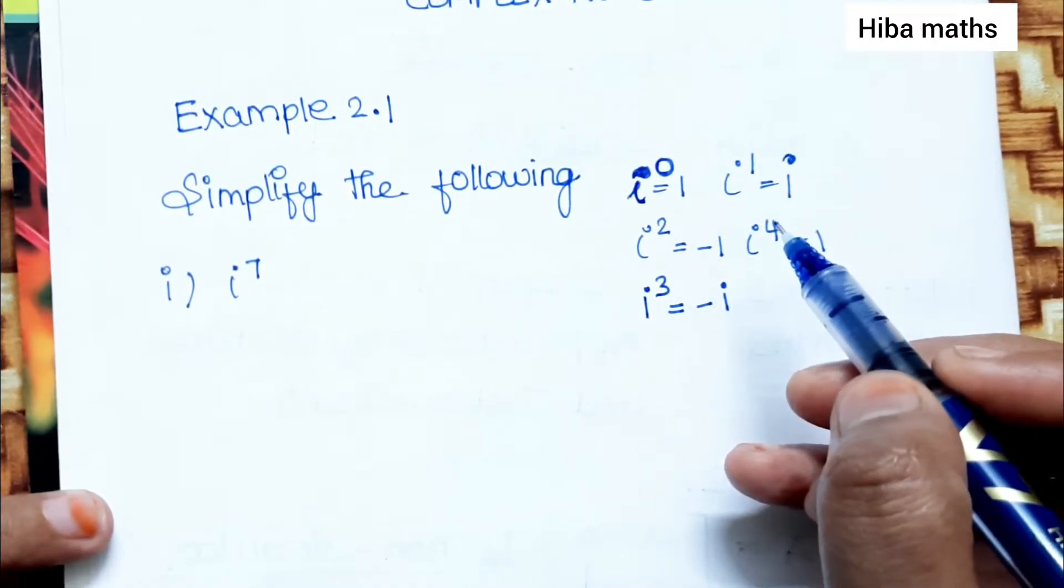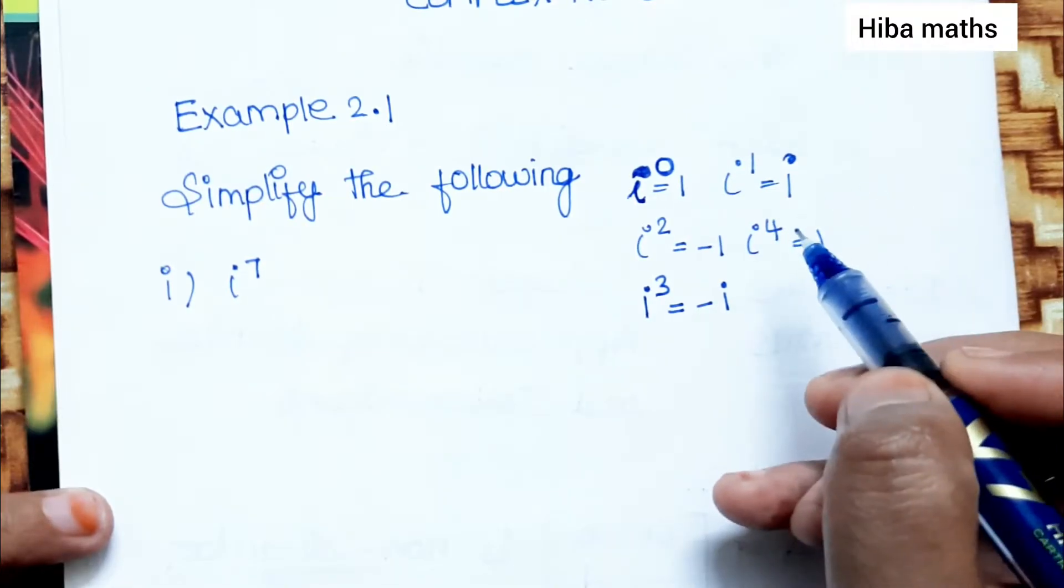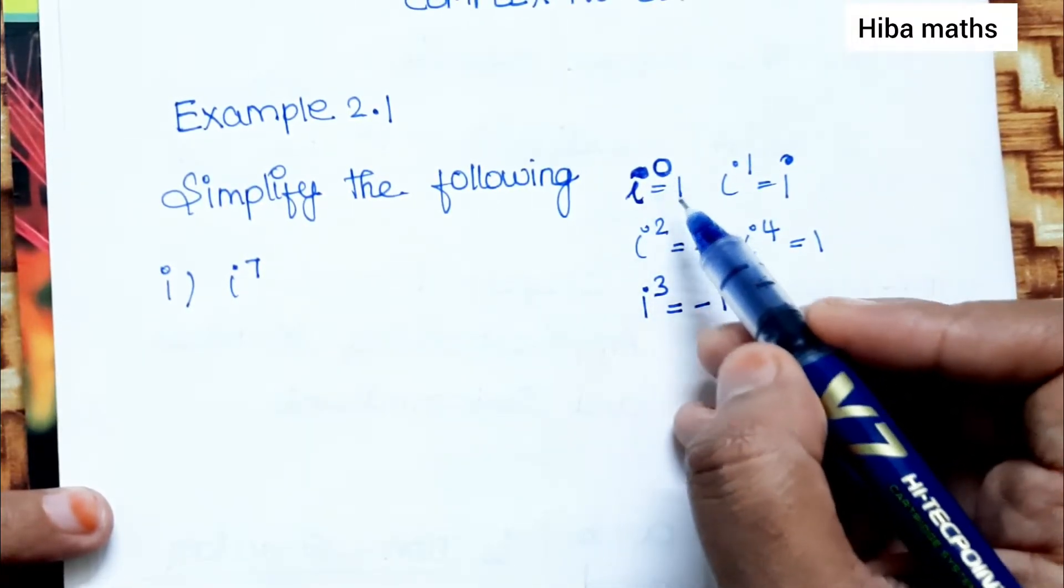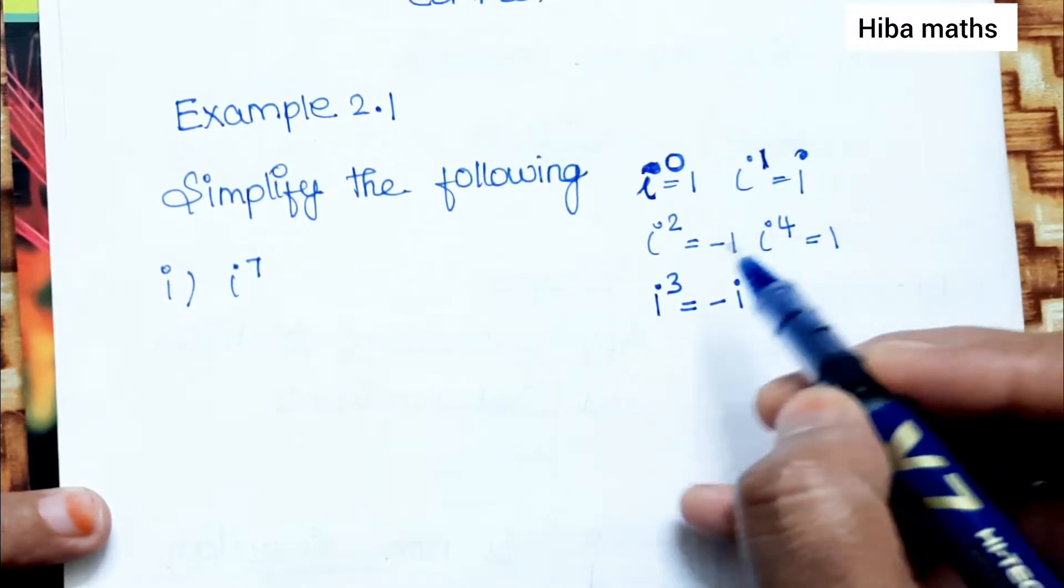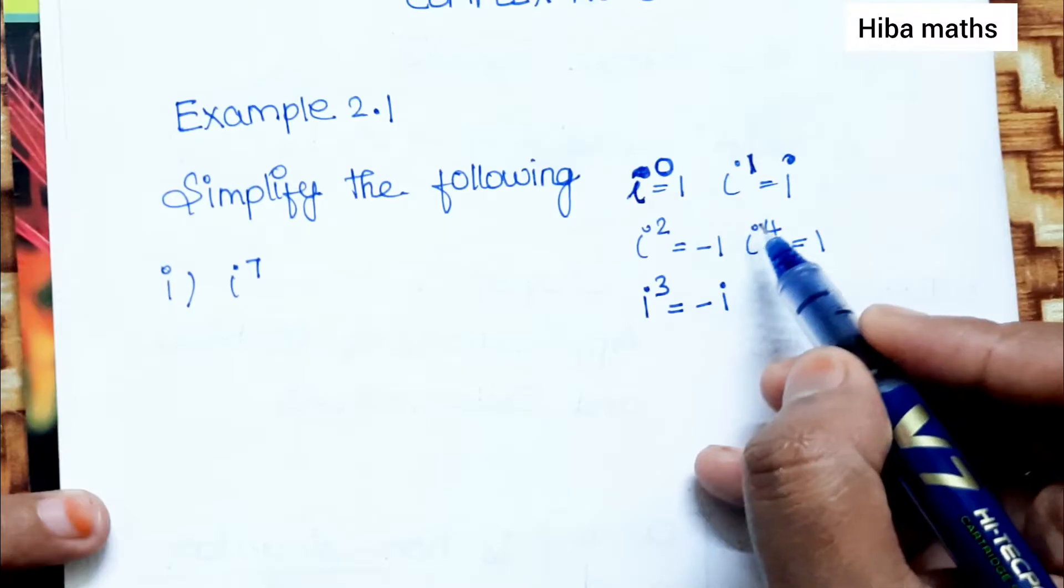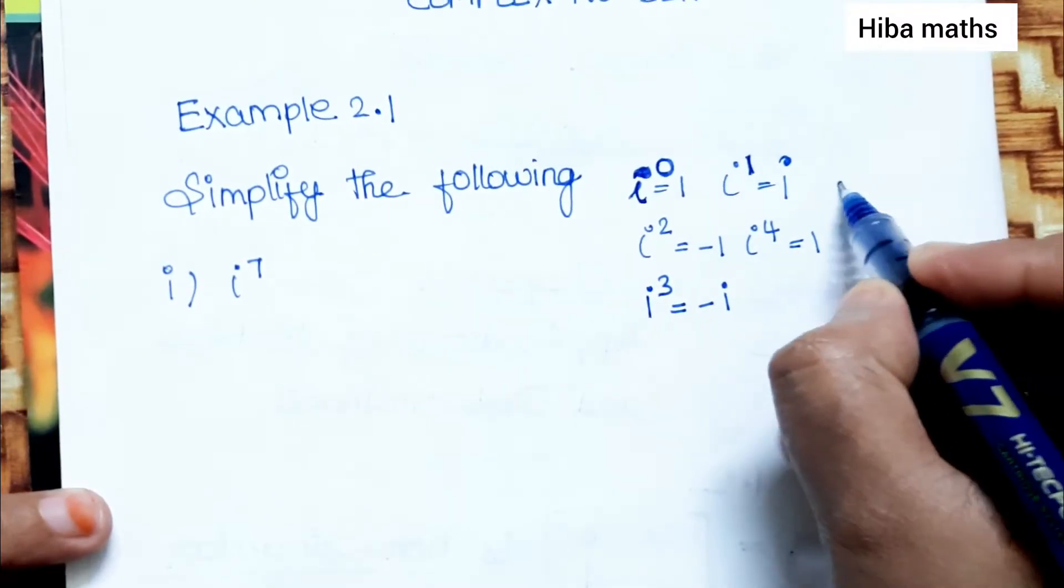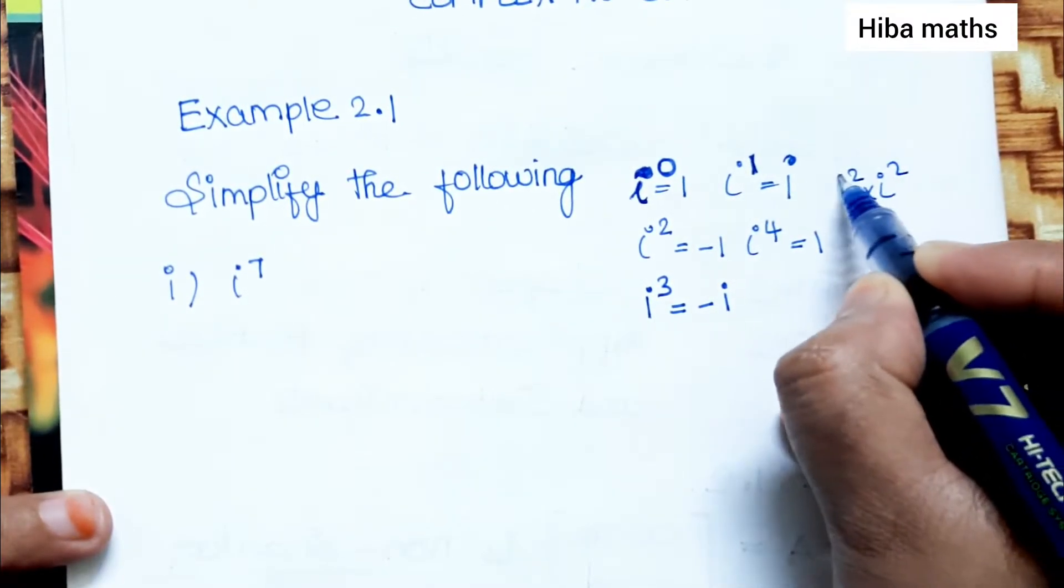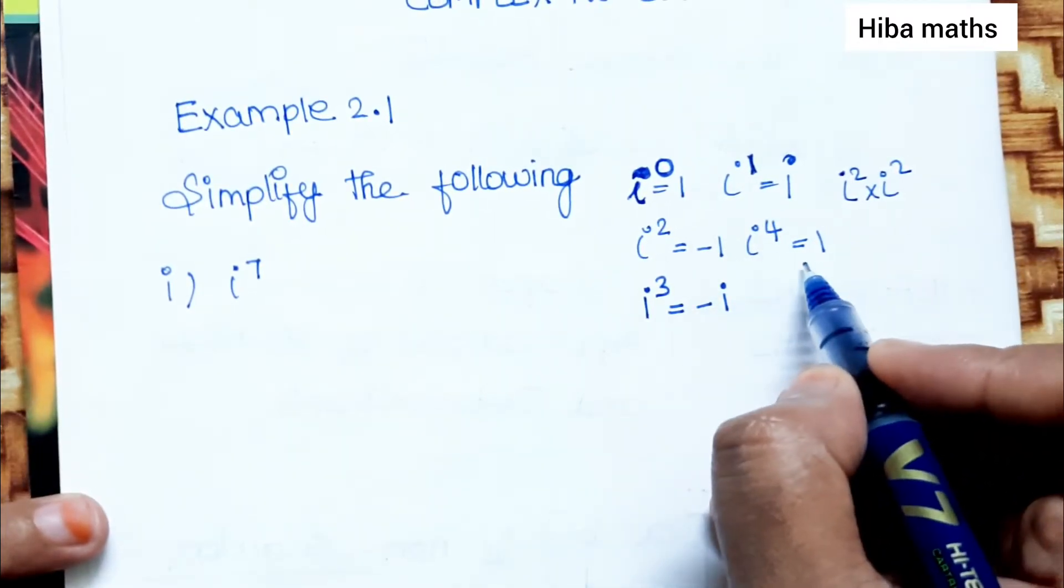I will read it. i power 0 equals 1. i power 1 equals i. i square, i into i, that is equal to minus 1. i power 4, i square into i square, so minus 1 into minus 1, plus 1.